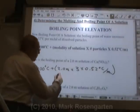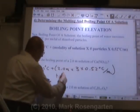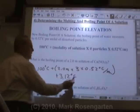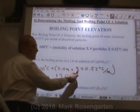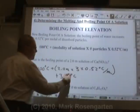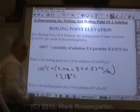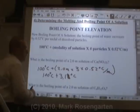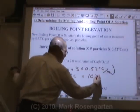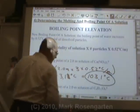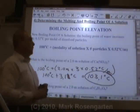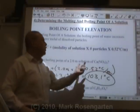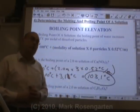The temperature of the boiling point will increase by 3.12 degrees Celsius. We have two sig figs, so let's round that to 3.1 degrees Celsius. If we take 100 degrees Celsius and add 3.1 degrees Celsius, our new boiling point is 103.1 degrees Celsius. So a two molal solution of calcium nitrate has its boiling point increase by 3.1 degrees Celsius to a new boiling point of 103.1 degrees Celsius.